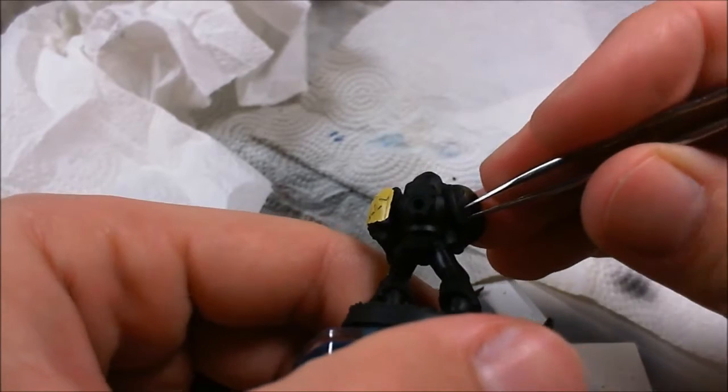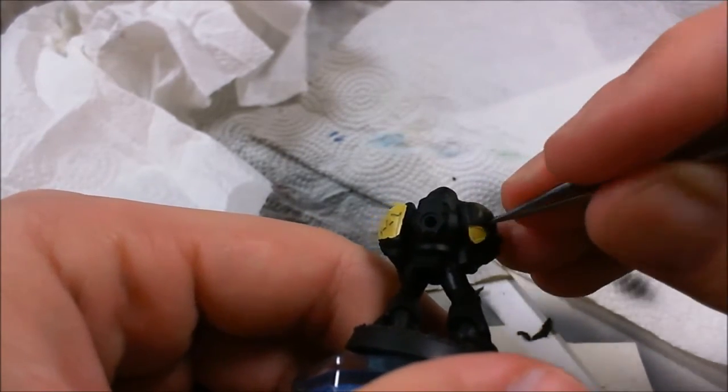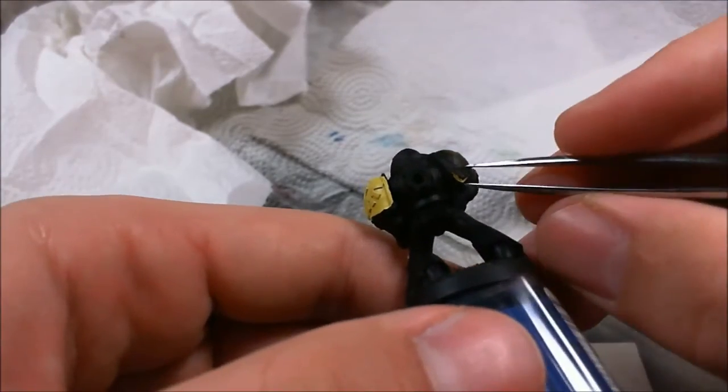You just want to make sure that you have a thick coat all the way up to the edge, or else you're not going to be able to get off the liquid mask if it's too thin on the edges.